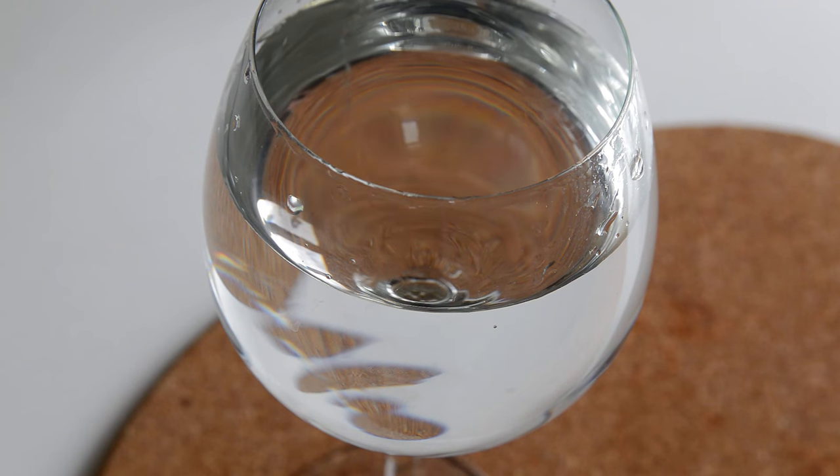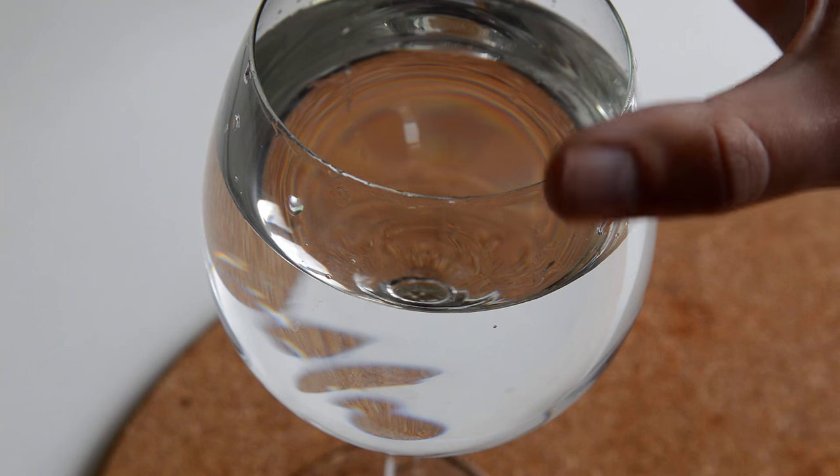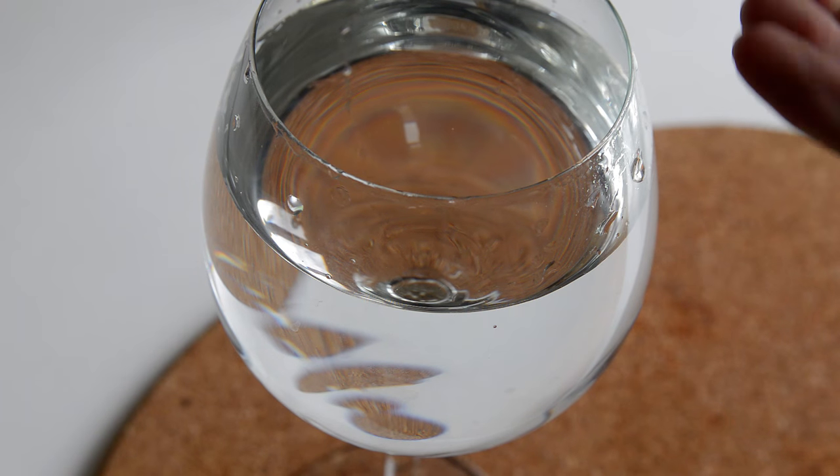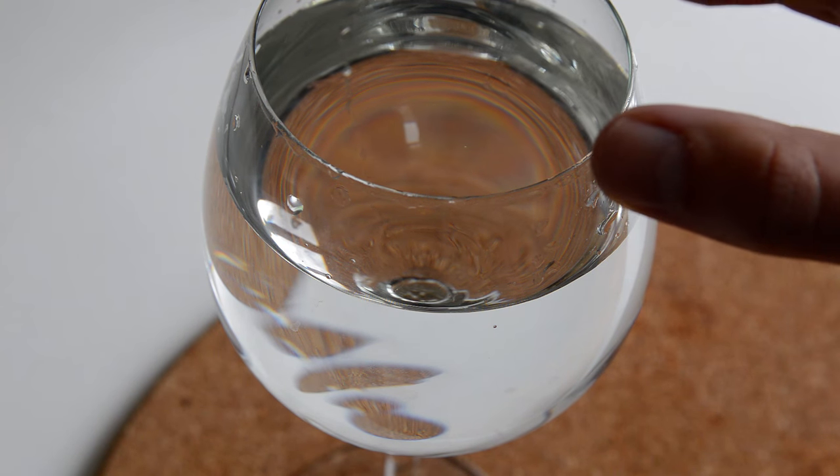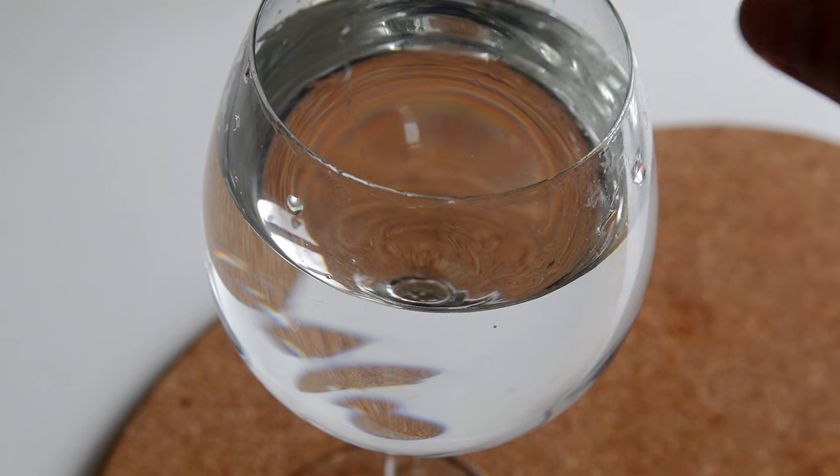Now I thought this might be the case just from thinking about it, but I think it's the rim of the glass which vibrates the most, and therefore the higher the liquid level the closer it is to the rim and therefore the bigger the ripples that we get on the surface.